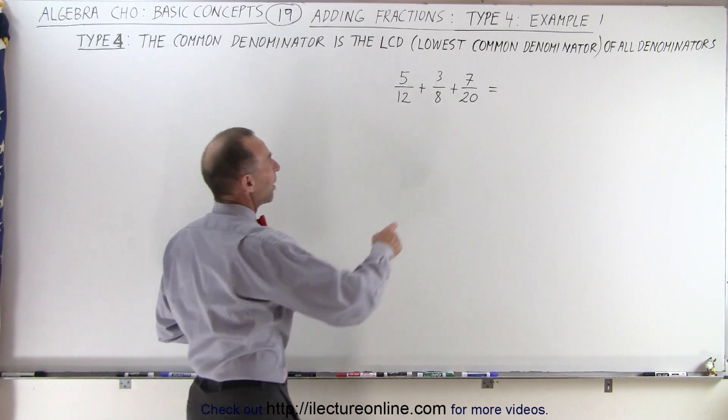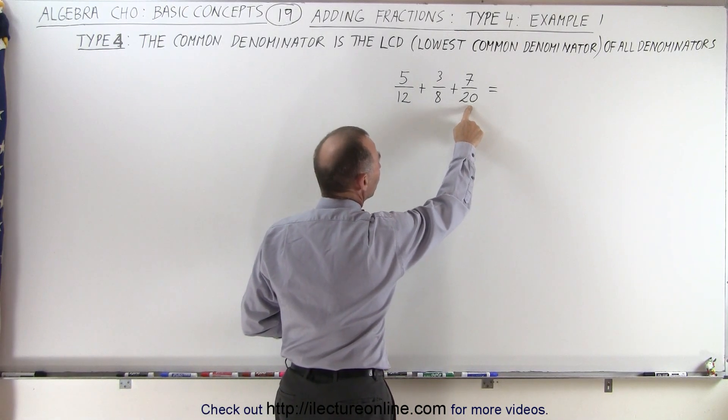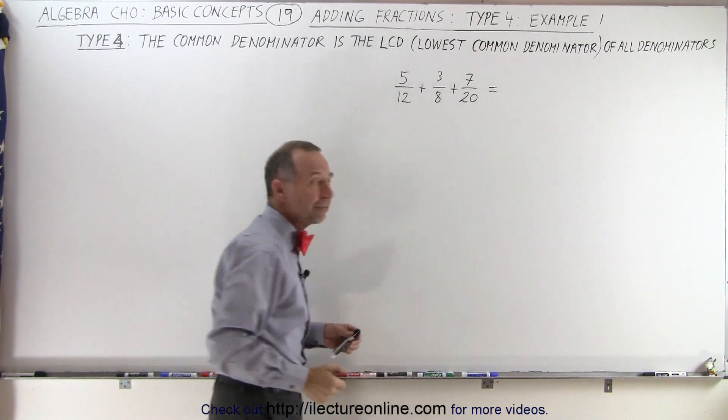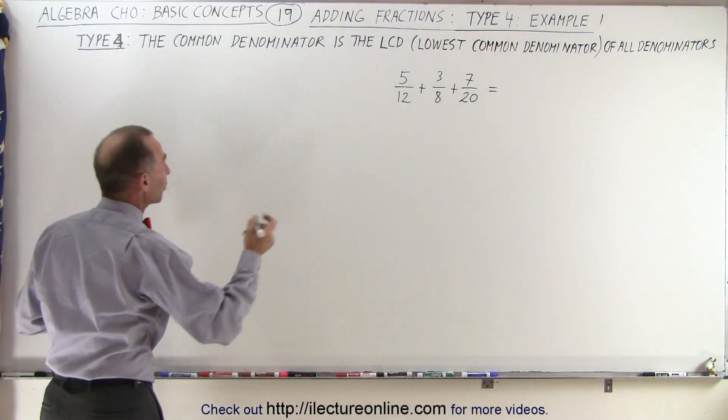Our first method is to find multiples of the largest of the denominators and see if the smaller two denominators fit evenly into that. So starting with the first one,